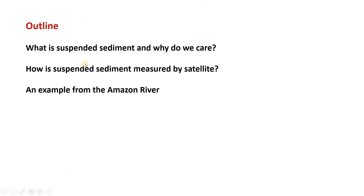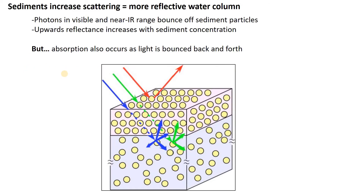So I hope you believe this is something worth measuring. It turns out that this is something we can measure quite well from satellite sensors, and here's why. When you fill the water column with a lot of sediment, those sediments are actually reflective — they scatter light very effectively. In particular, the visible and near-infrared wavelengths bounce off sediment particles. This is essentially Lambertian scattering. So the more sediment you have in your water column, the brighter your water gets.